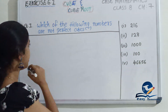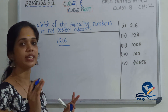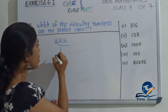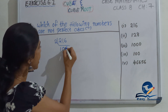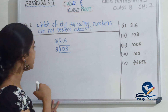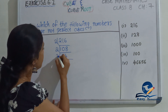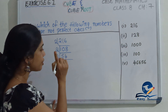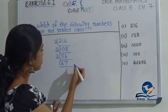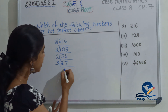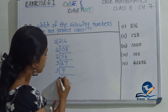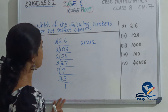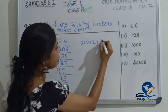The first number is 216. Let's do prime factorization of 216. We divide: 216 by 2 gives 108, 108 by 2 gives 54, 54 by 2 gives 27, then 27 by 3 gives 9, 9 by 3 gives 3, and 3 by 3 gives 1. So the prime factors are 2×2×2 × 3×3×3, giving us two complete triplets. Therefore, 216 is a perfect cube.